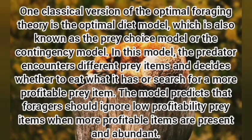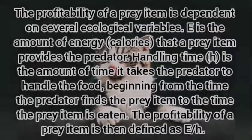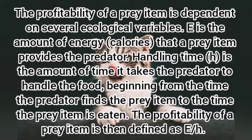One classical version of optimal foraging theory is the optimal diet model, also known as the prey choice model or the contingency model. In this model, the predator encounters different prey items and decides whether to eat what it has or search for a more profitable prey item. The model predicts that foragers should ignore low-profitability prey items when more profitable items are present and abundant.